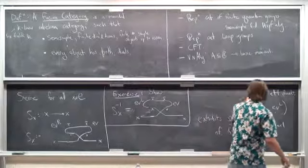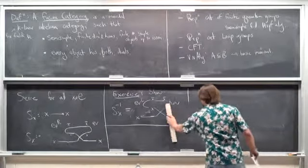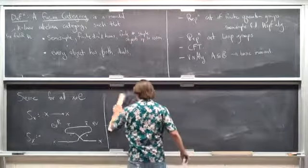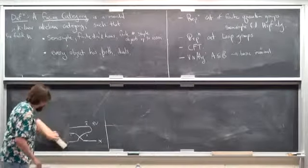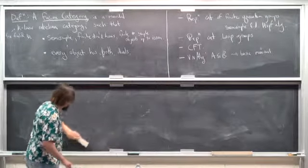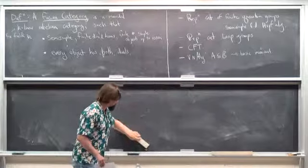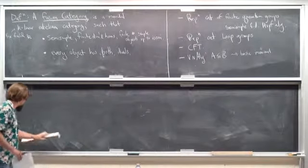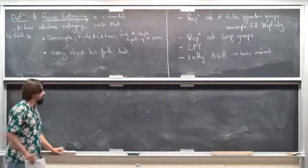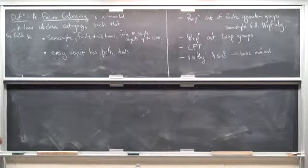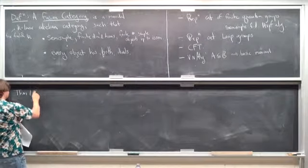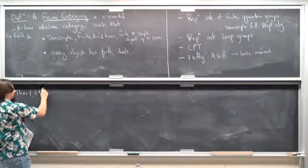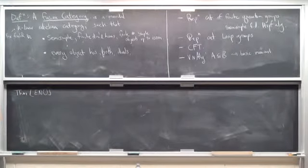There's a whole structure theory of fusion categories, and it's very interesting to understand what kinds one can construct. The theory has a lot of similarities to the theory of finite groups, but unlike the theory of finite simple groups, we really have no idea what kinds of things are possible. One big theorem about these, proved in this generality by Etingof, Nikshych, and Ostrik, is the following remarkable property: if F is a fusion category, then there's a certain endofunctor you can construct which goes from F to itself. It takes an object X and maps it to its double dual — but if you keep applying the dual over and over, since left duals and right duals are not the same, this could be something totally new. But in a fusion category, if you apply it four times, this is canonically naturally isomorphic to the identity functor.